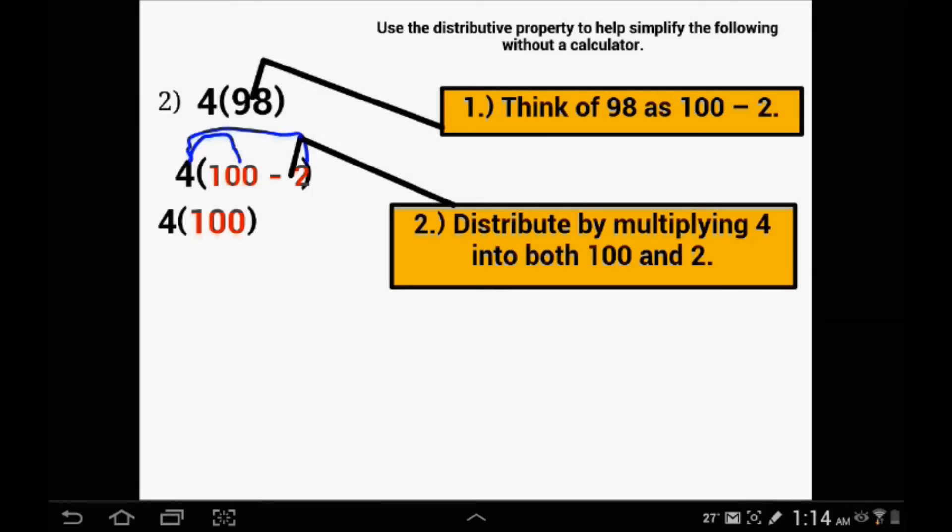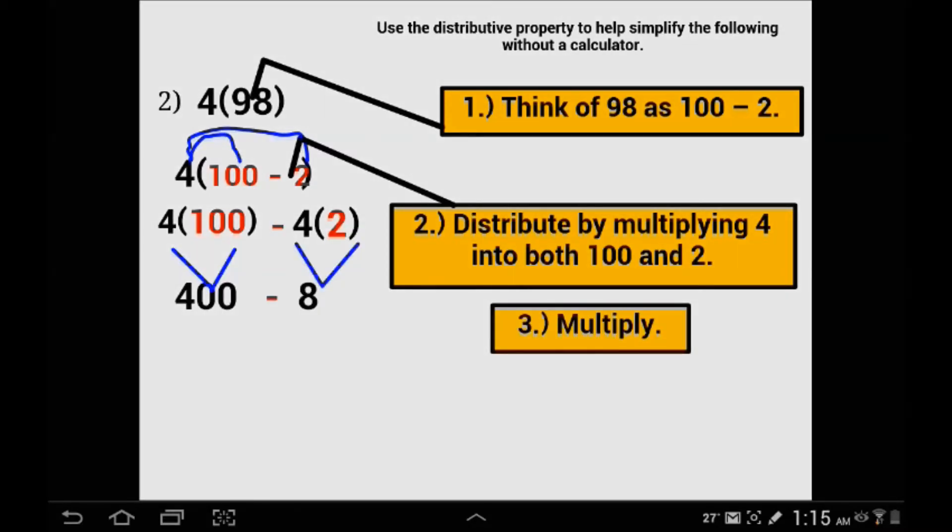I am going to write the multiplication: 4 times 100 and then 4 times 2. 4 times 100 is very simple to do mentally, subtract it and you get 392. A different way to think of multiplication. I know a lot of you are probably thinking you can just do this the normal way, but this is good practice with mental math strategies.